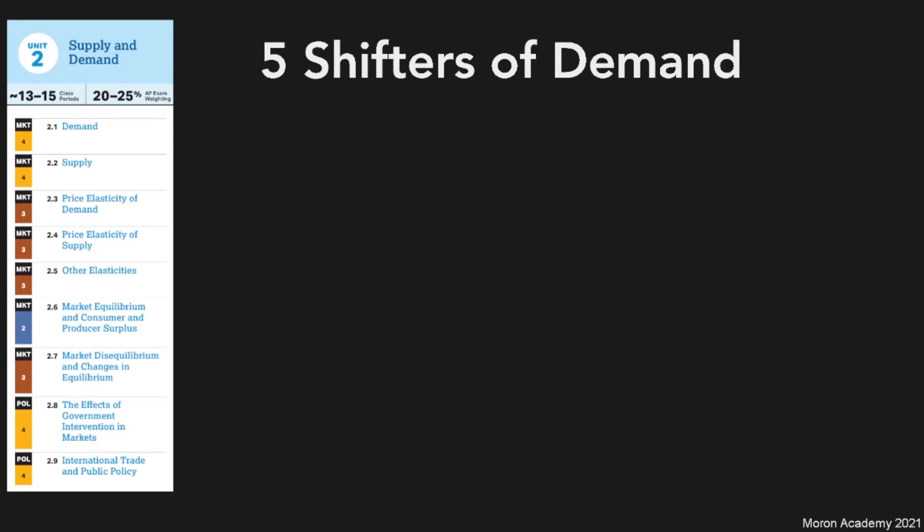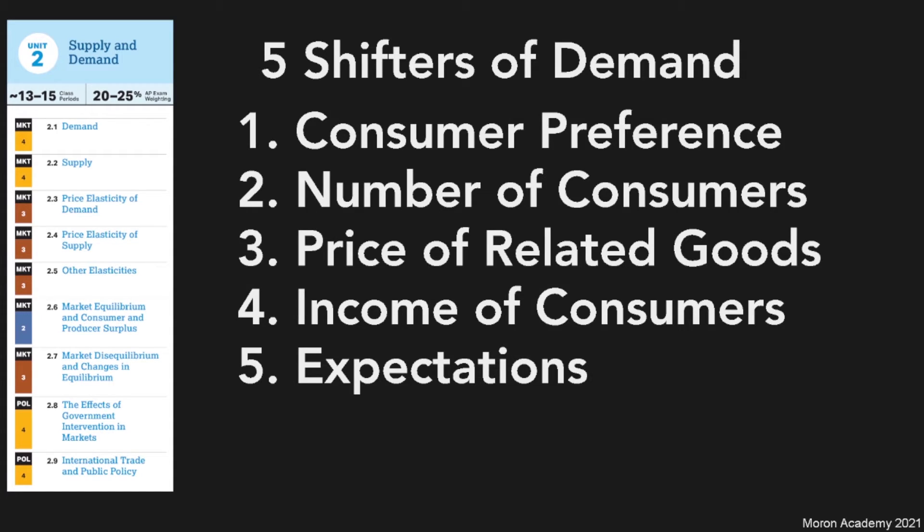So, the five shifters of demand are: one, consumer preference; two, number of consumers; three, price of related goods; four, income of consumers; and five, expectations. So, what do each of these mean?